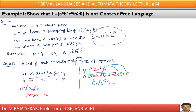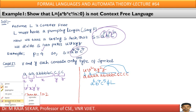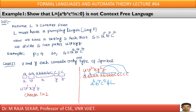Let me assume p = 4. If p = 4, then s = a^4 b^4 c^4. This particular string must be divided into 5 parts u, v, x, y, z.